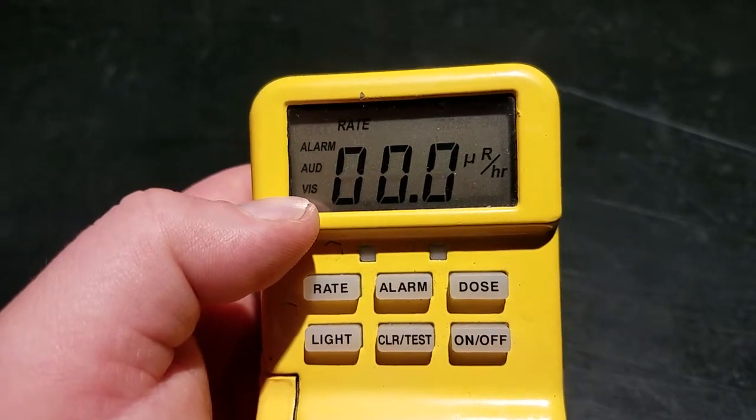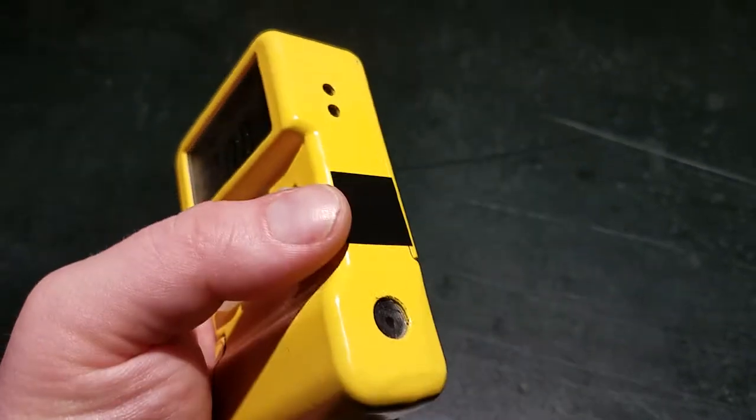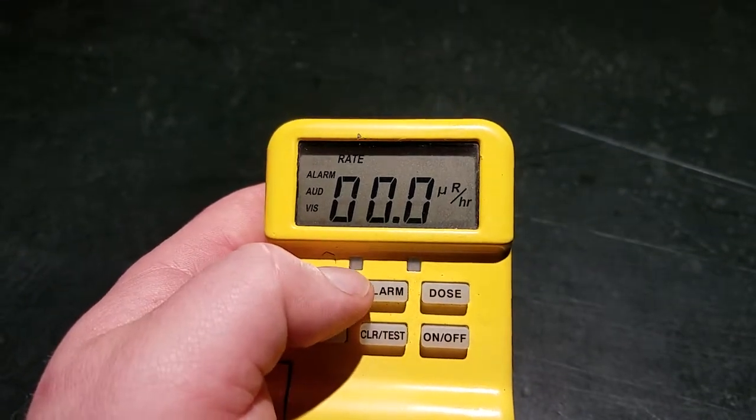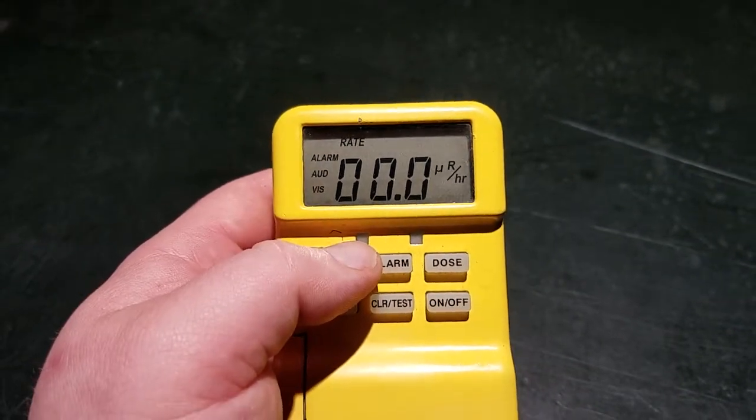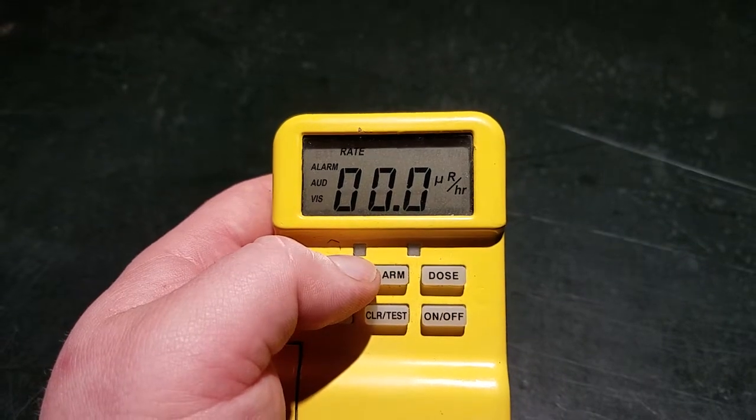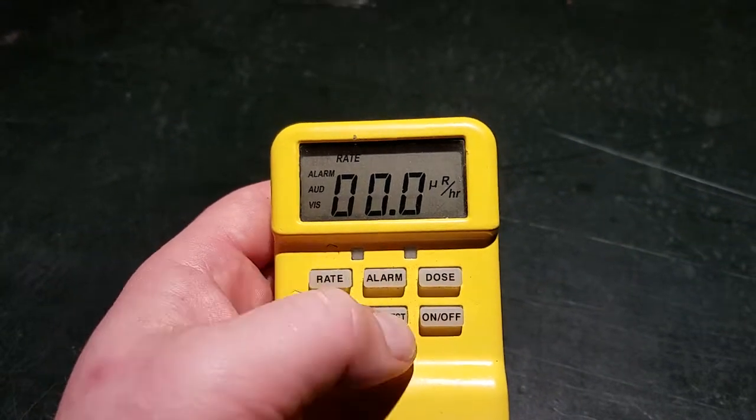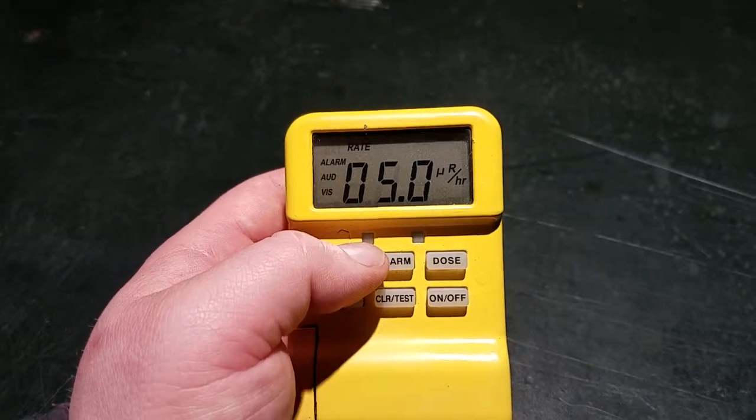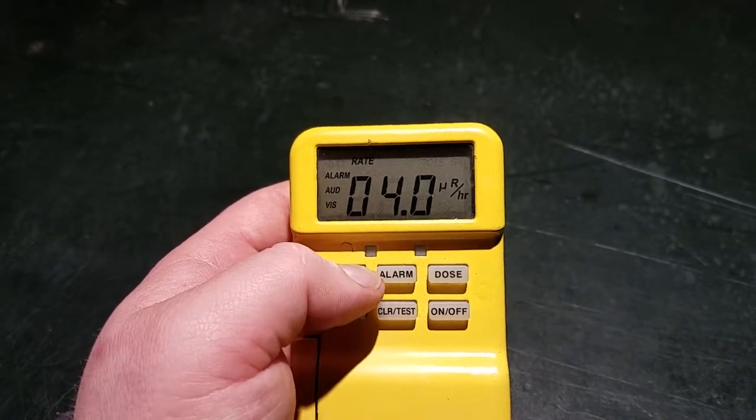The audible alarms will be beeps, and the visual alarms here on the left are for the rate. This will actually flash green if it hits the low threshold and start beeping. You can hit the clear button and it'll stop beeping, but if you hit the upper threshold for rate, it'll go red and the beeping will not stop even if you hit clear.